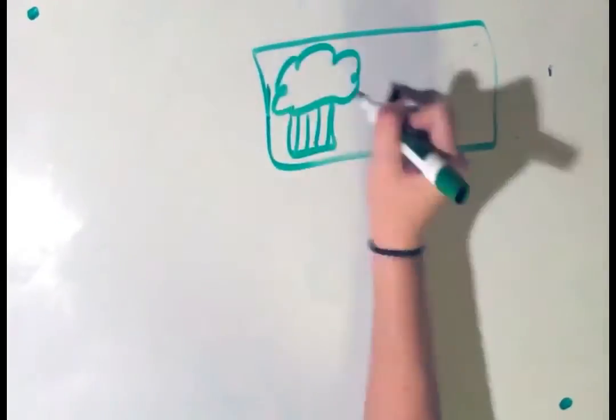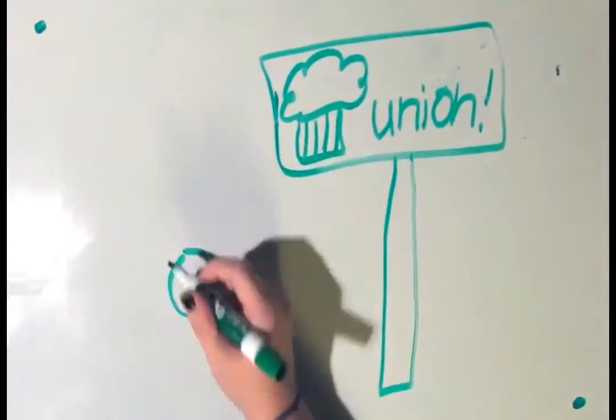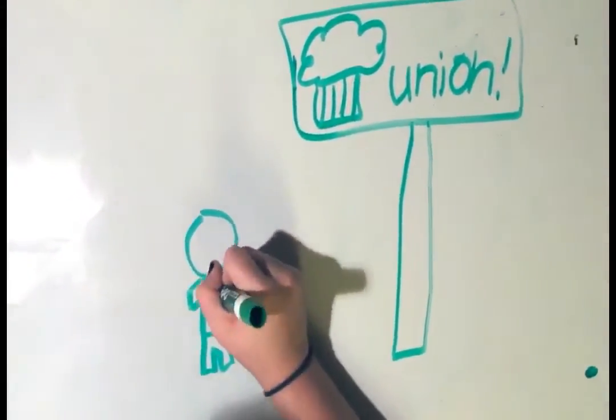For the union to succeed, Bob would need to advertise the union, lobby government officials, or increase the price of other substitute resources.